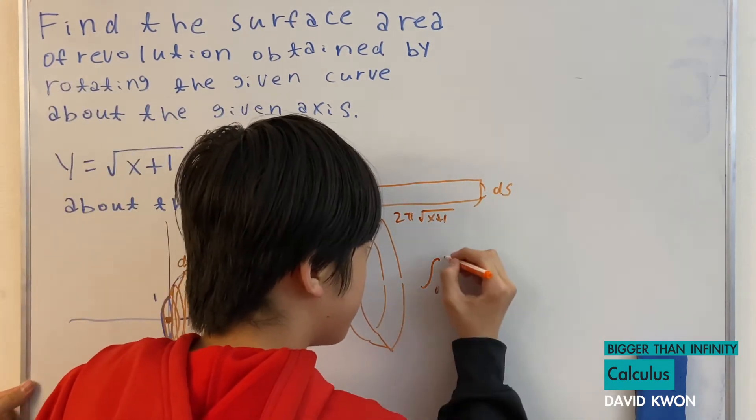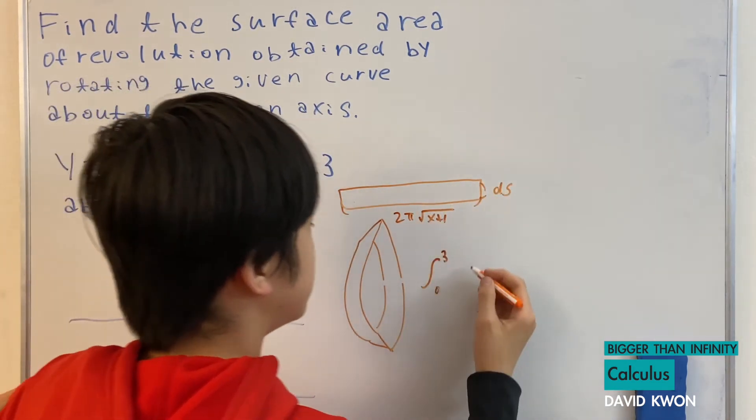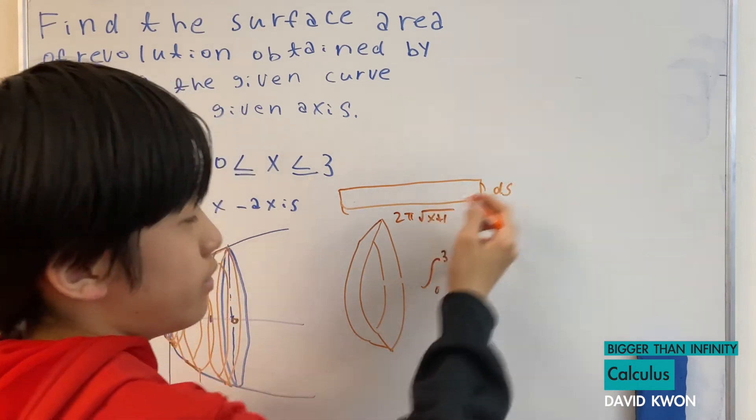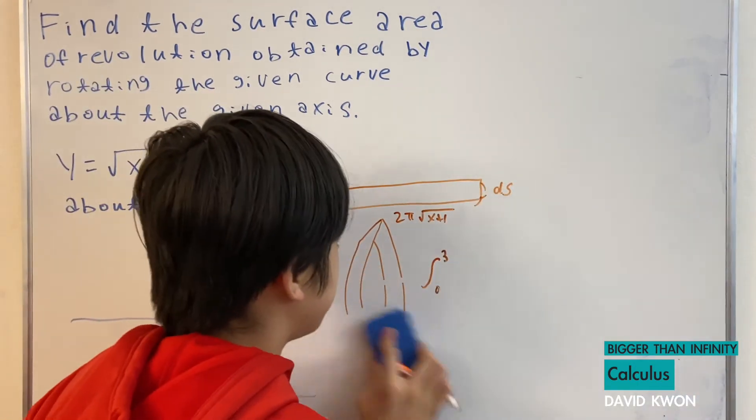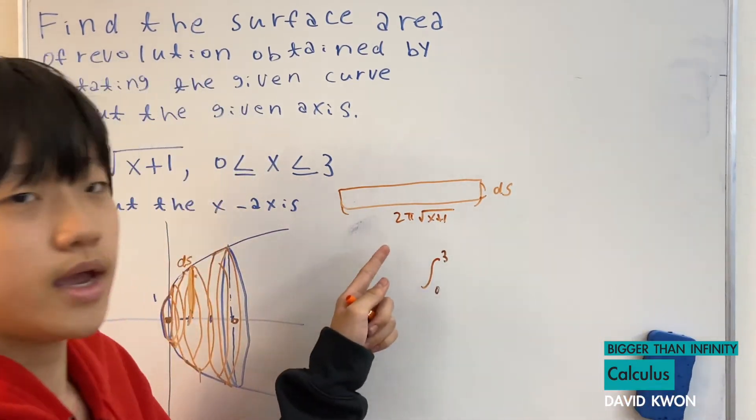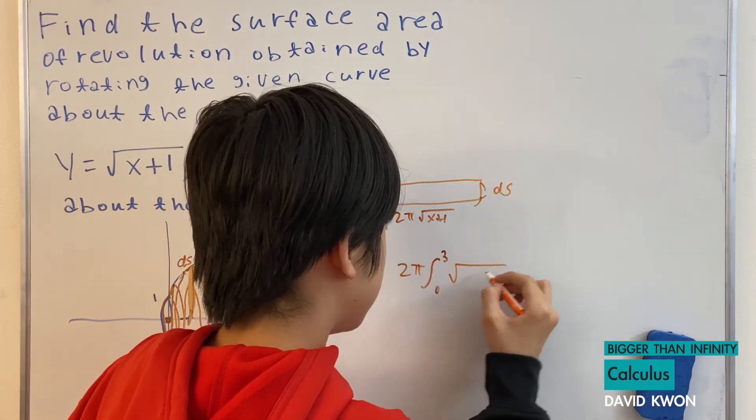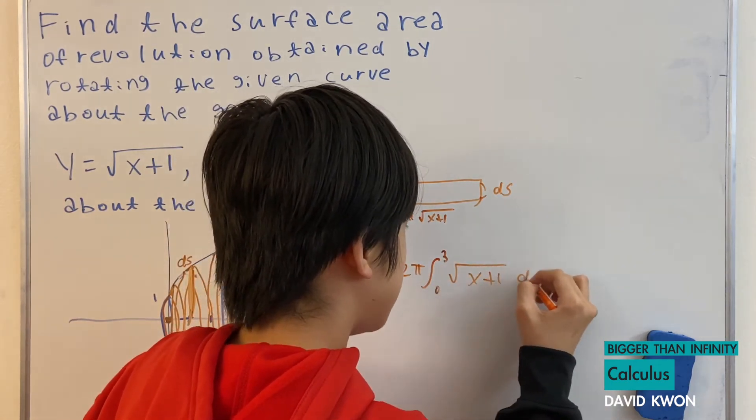0 to 3. And I just put this in here. When I multiply them together. But you guys know that the 2 pi right here is a constant, right? So it can come up from here. Then I still have dx plus 1 times ds.